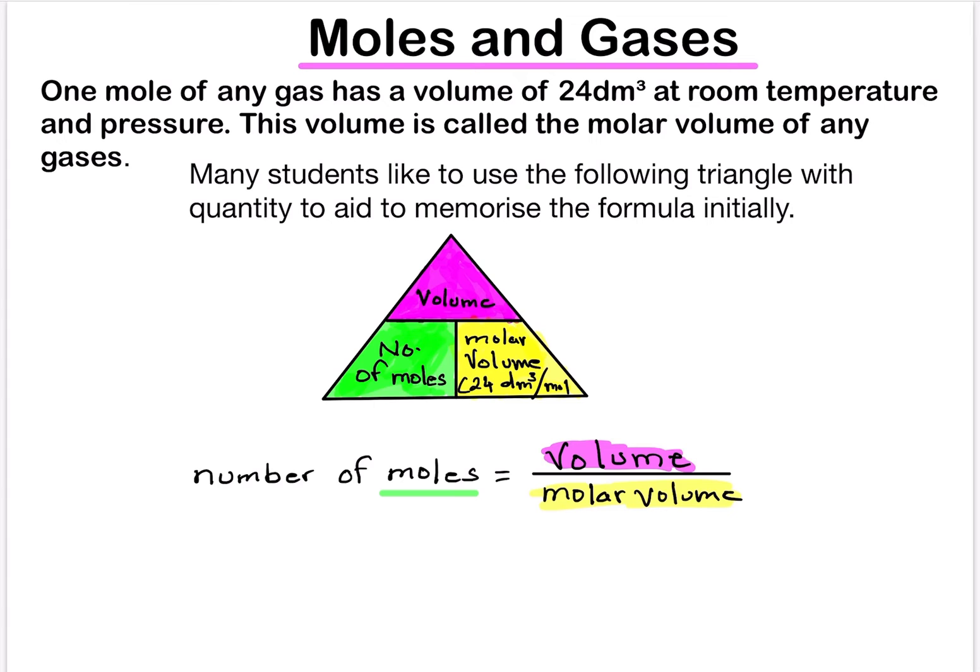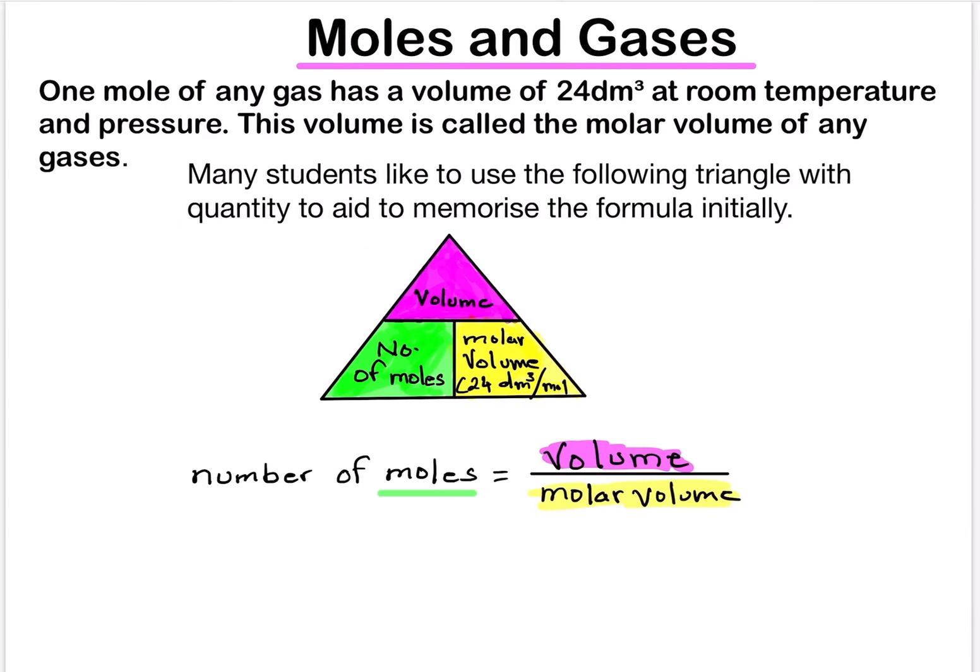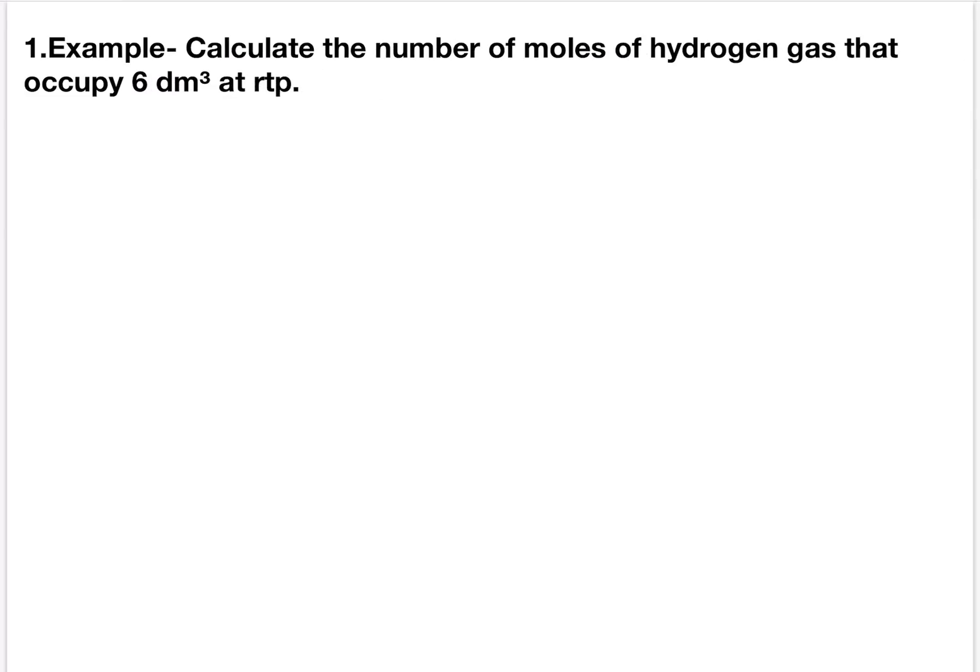Let's understand this by doing some examples. Now the first example is calculate the number of moles of hydrogen gas that occupy 6 dm³ at room temperature and pressure.